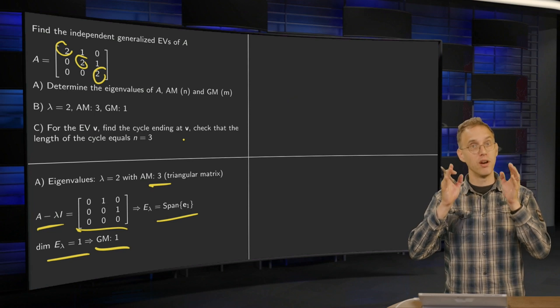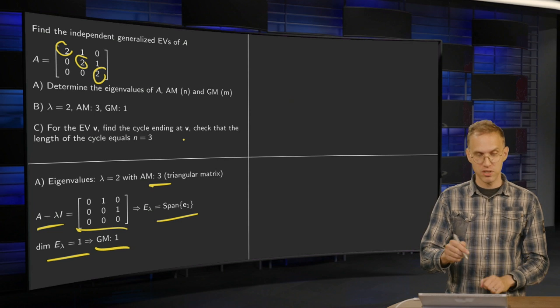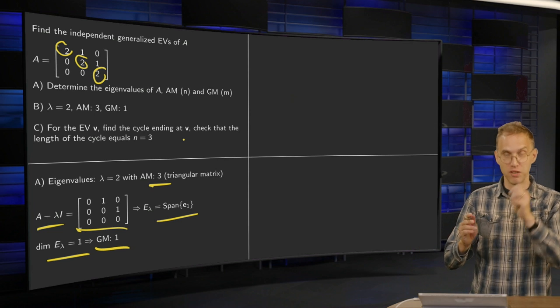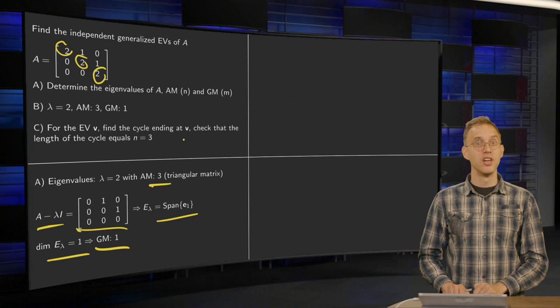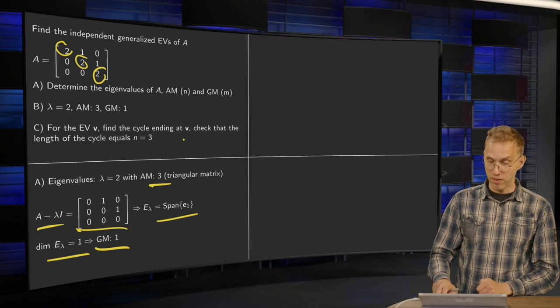So now we know that we will have one cycle because we have one endpoint. Our endpoint will be this E1. We have one endpoint, one cycle. We have a 3 by 3 matrix. So we need a cycle of length 3.